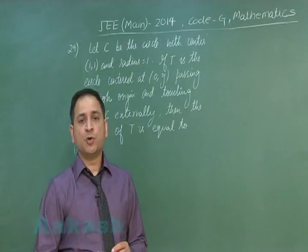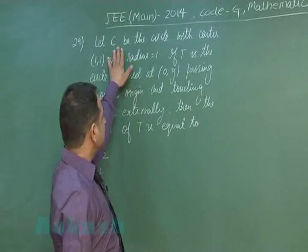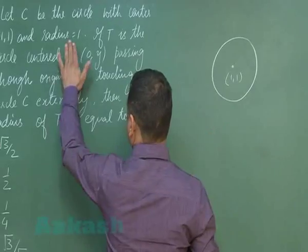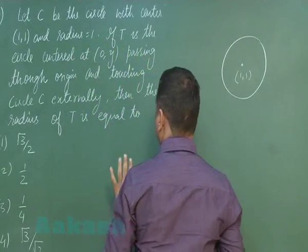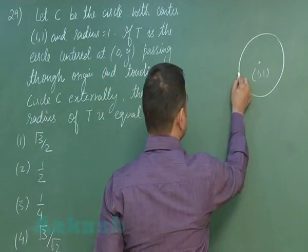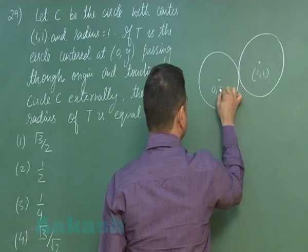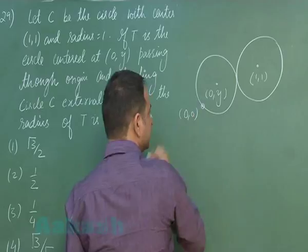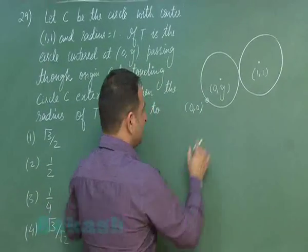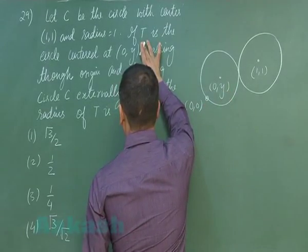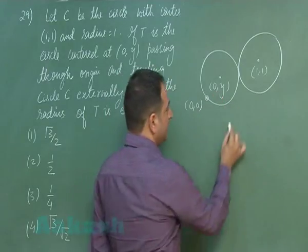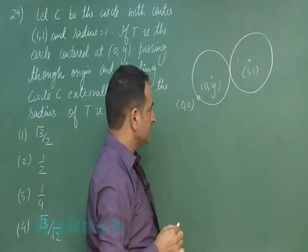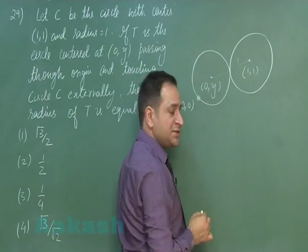Moving to problem number 29, related to coordinate geometry — circles. A circle C with center (1,1) and radius 1 is touching externally another circle having center (0, y) and passing through the origin. This other circle is named T. We have to find the radius of circle T. Since the two circles are touching externally, the distance between centers equals the sum of radii.